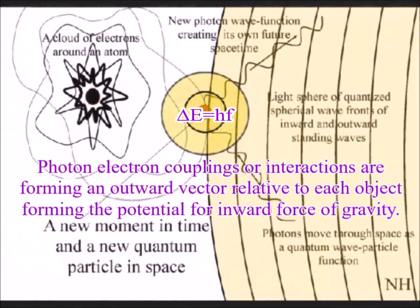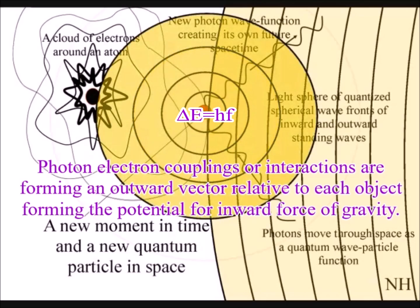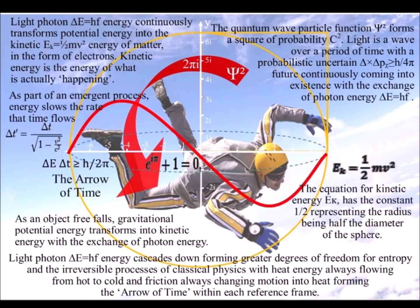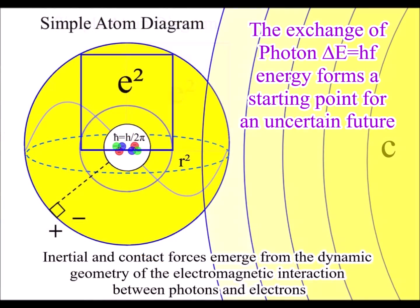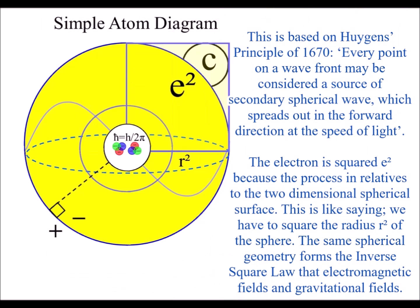Someone within a gravitational field in freefall will experience the randomness of quantum mechanics as a probabilistic uncertain future that is coming into existence with each photon-electron coupling or dipole moment.